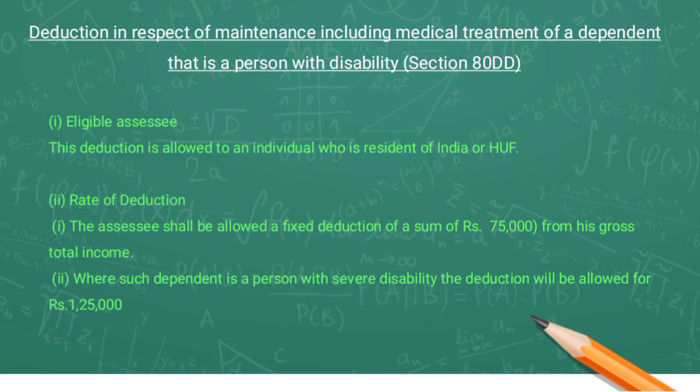The assessee nominates either the dependent being a person with disability, or any other person or trust, to receive the payment on his behalf for the benefit of the dependent being a person with disability.